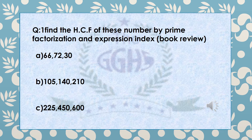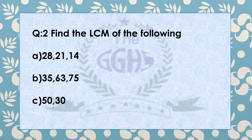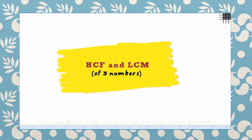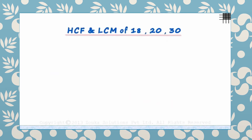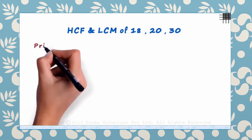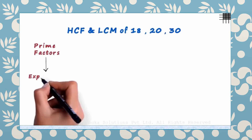Find the HCF of these numbers by prime factorization and expression index. We have to find the HCF and LCM of 18, 20, and 30. The best way to do it is by reducing all numbers to their prime factors and then writing them in exponential form.